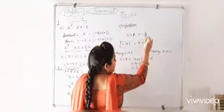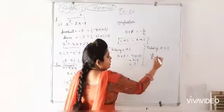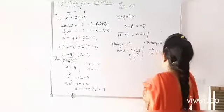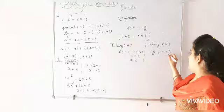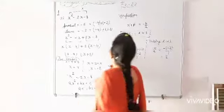Right hand side is minus b by a. Minus b means b is minus 2. One minus is for this and one minus is here, divided by 1. Means plus 2. Minus minus minus plus will become.